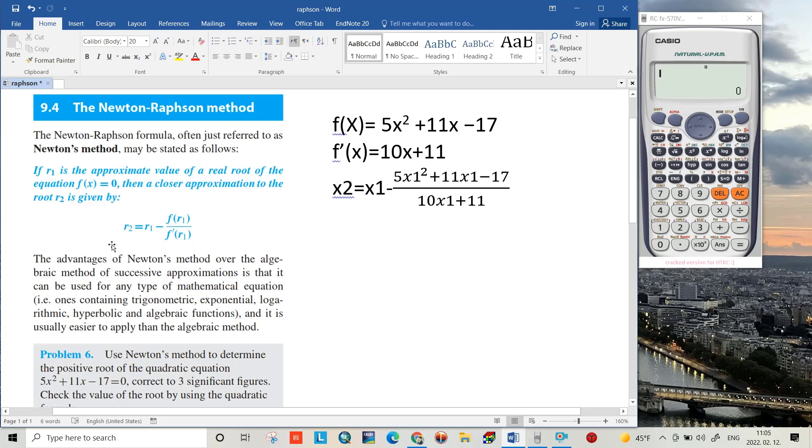Hello everyone, today I want to show you how we can use a Casio calculator for trial and error. For this purpose, I use the Newton-Raphson method, which is a method for finding the roots of an equation.